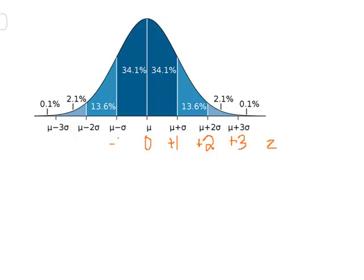Going the other direction, we will have negative one, which represents one standard deviation below the mean. The sign of the z-score tells you whether it's above or below — if it's positive, the z-score is above the mean; if it's negative, it is below the mean. And the number itself tells you how many standard deviations it is away from the mean. We also have negative two and negative three, representing two and three standard deviations below the mean, respectively.